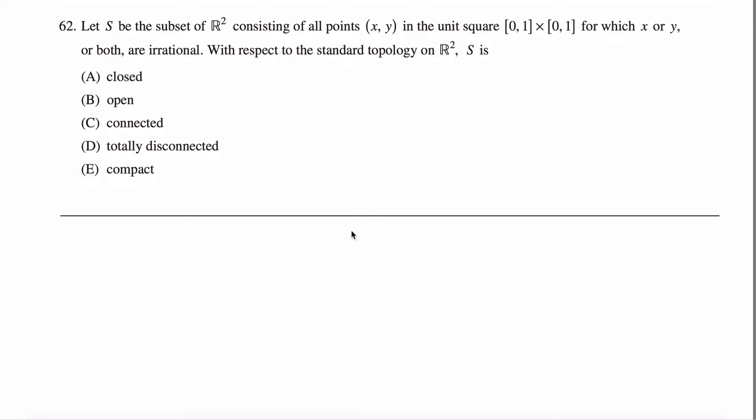Alright, problem 62 off the math subject GRE practice test. S is the subset of R squared containing all of the points in the unit square for which x or y or both are irrational.